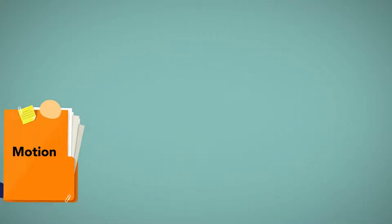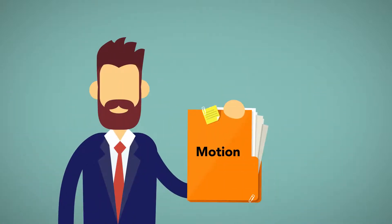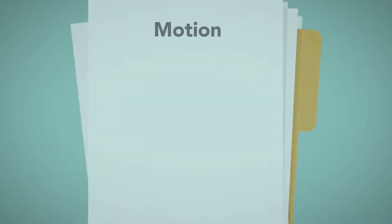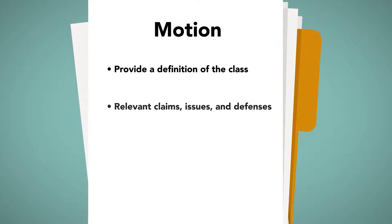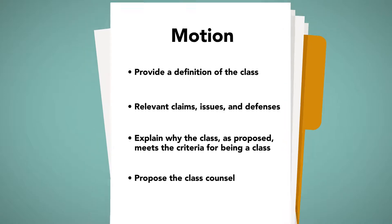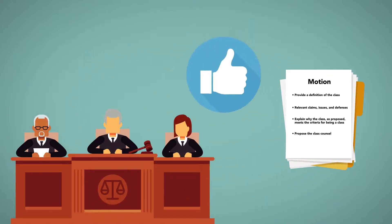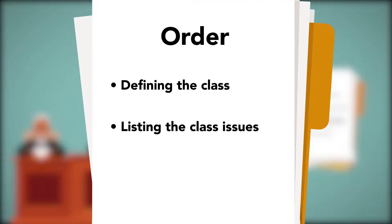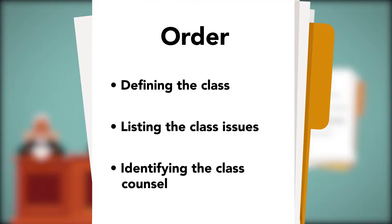The attorney seeking to represent the class must move for class certification at an early practicable time. The motion should provide a definition of the class and any relevant claims, issues, and defenses, and should explain why the class, as proposed, meets the criteria for being a class. The motion will propose the class counsel who will represent the class. If the motion is granted by the court, the court will issue an order defining the class, listing the class issues, and identifying the class counsel.